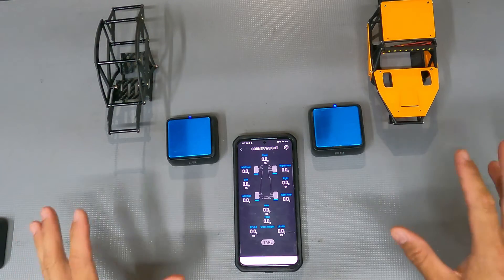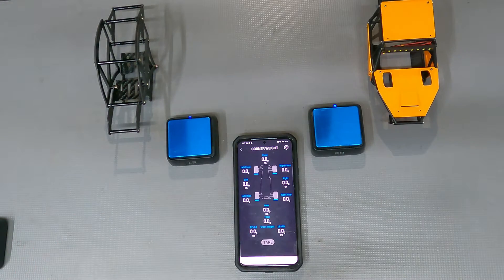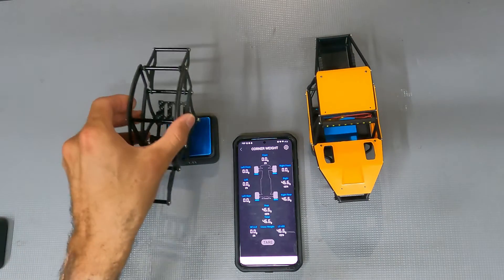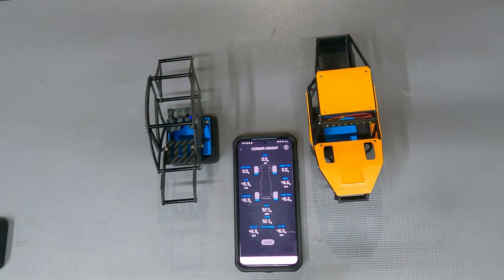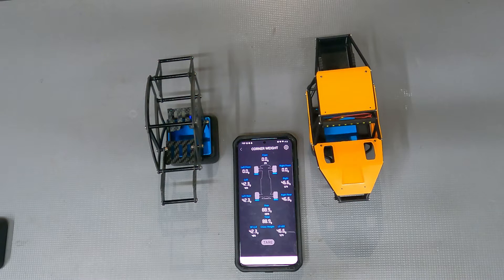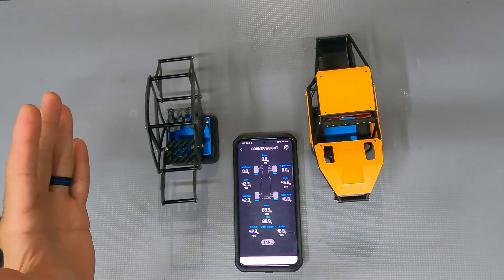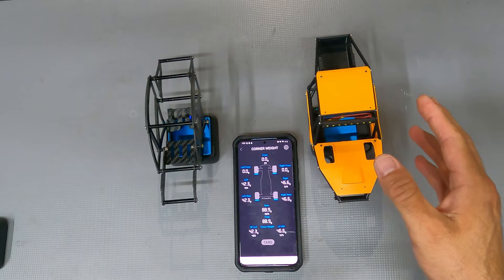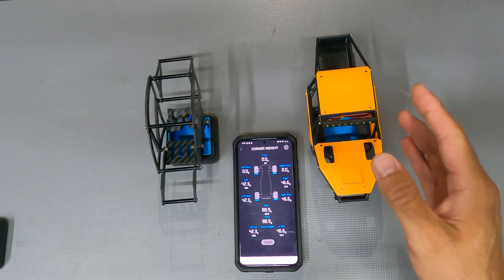So let's get some quick measurements and weights on both of these and see how they compare with each other. So we'll go ahead and get these guys on the scale and see what the weight difference is. So the Kangaroo is coming in at about 42.3 grams.